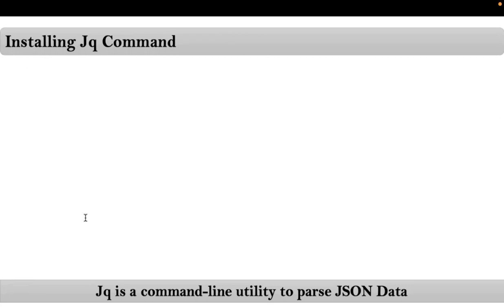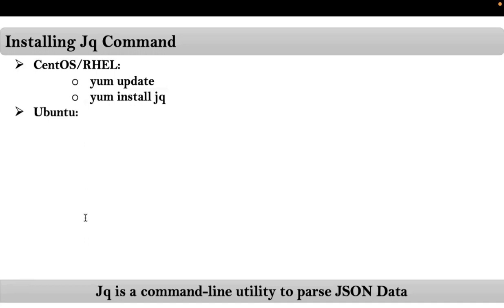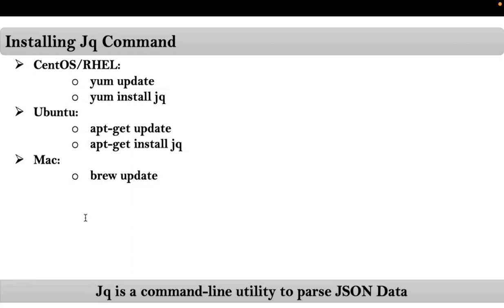Now let me go with how to install JQ command. Basically we can use JQ command on almost all operating systems, but the efficient way is in your shell scripts. To install JQ on CentOS or RHEL, first update yum and then run yum install jq. For Ubuntu, update apt-get and then run apt-get install jq. For Mac, update brew and then run brew install jq.